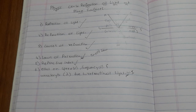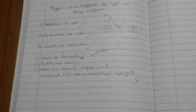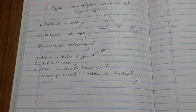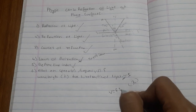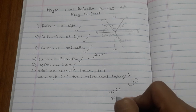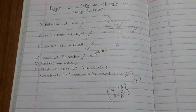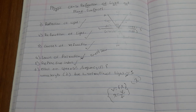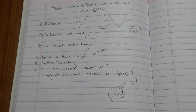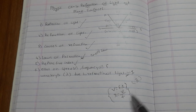The frequency of light depends on the source of light, so it does not change on refraction. The speed of light v in a medium is related to its wavelength λ by the equation: v = frequency × wavelength, or λ = v / frequency. The relationship between wavelengths in two media is also defined by this formula.